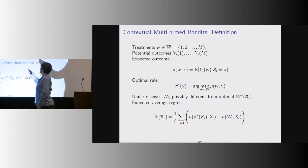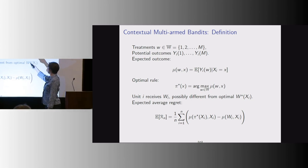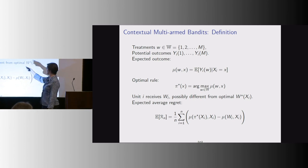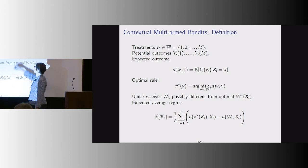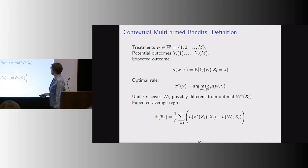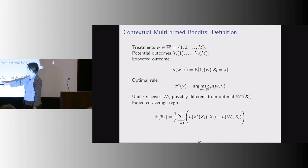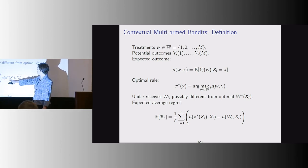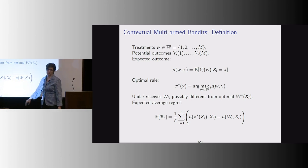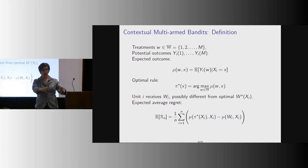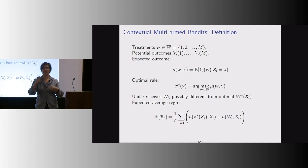The expected outcome mu(w, x) would be the conditional expectation of your potential outcome with arm w if your covariates are x. The optimal rule for people with covariates x maximizes that expected value — we're personalizing based on observables only. The regret is the gap between the expected potential outcomes if I assign you to the optimal treatment minus what I actually treat you with in the experiment. We're used to having the w's given to us; here we're actually going to create the w's.